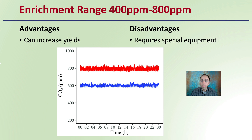The advantage of the 400 to 800 ppm range is increasing yields. However, this does start to require specialized equipment, even in the 400 to 800 parts per million range.